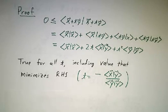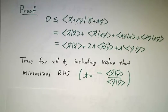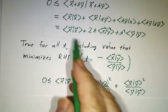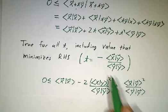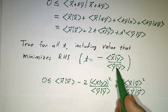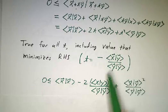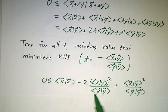So let's do that. So we get x dot x, and 2t times x times y, well, t is minus x dot y over y dot y. So that times x dot y, you get x dot y squared over y dot y. I'm even calling it y dot y. I really should say the inner product of y with y.